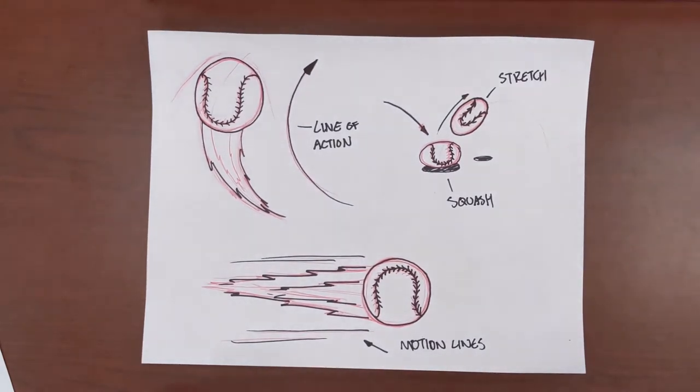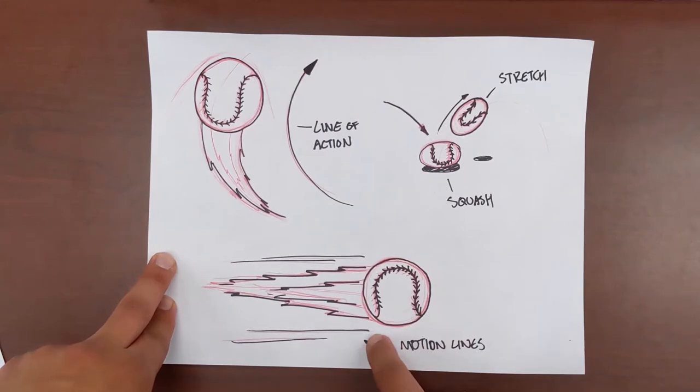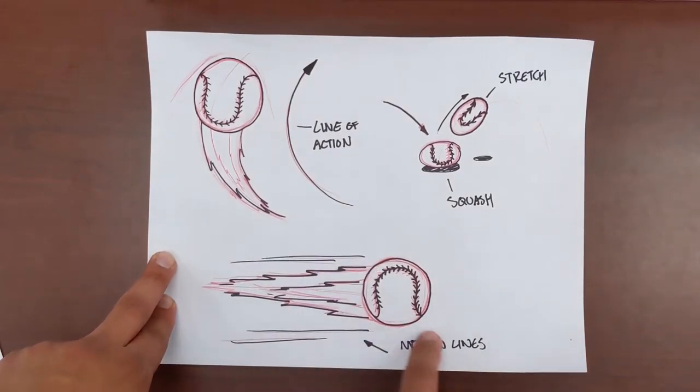Motion lines: Motion lines are additional lines we can add to our drawings to indicate there is some motion happening in that area of the drawing.